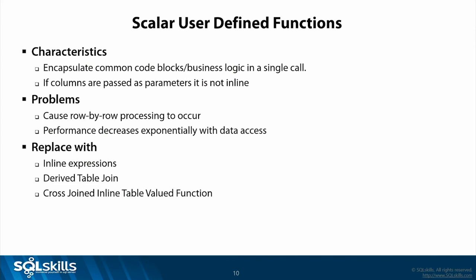Scalar UDFs also cause a non-parallel zone in your execution plan. If you have a statement that would have used parallelism as part of execution, a scalar user-defined function immediately turns that into a serial execution on a single thread — a huge performance blocker. Performance decreases exponentially with data access. And one really interesting thing: if you have excessive scalar UDF usage in your application, a lot of third-party monitoring tools cannot monitor your application because of the performance overhead of the events that get generated.